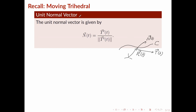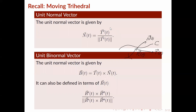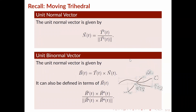Finally we have the unit binormal vector. This is defined as the cross product of the unit tangent vector and the unit normal vector. This binormal vector is perpendicular to both the unit normal and the unit tangent. One thing to note about the definition of the unit binormal vector is that since you're taking a cross product, the order of the vectors matters. You have to take the tangent vector first and then cross it with the normal vector — if you switch around the order you'll get something different.